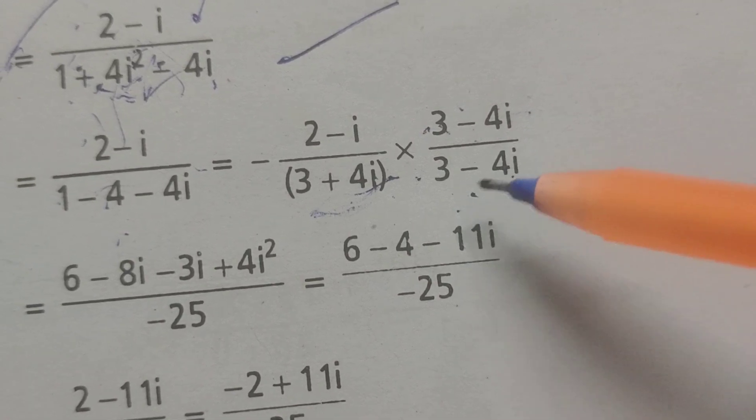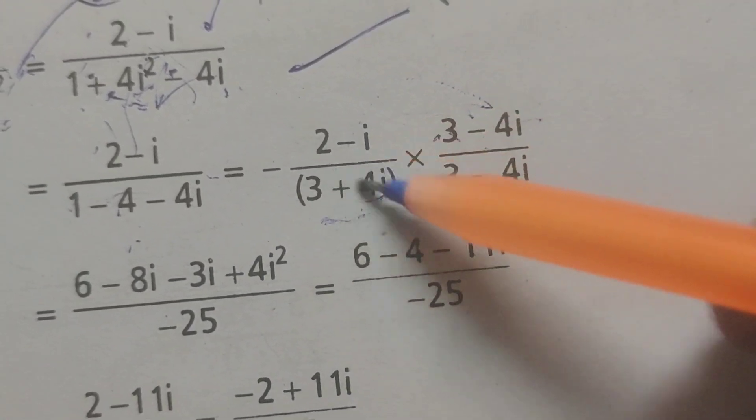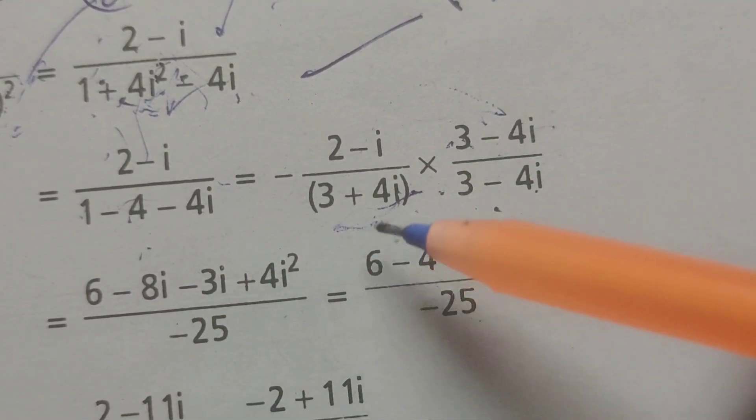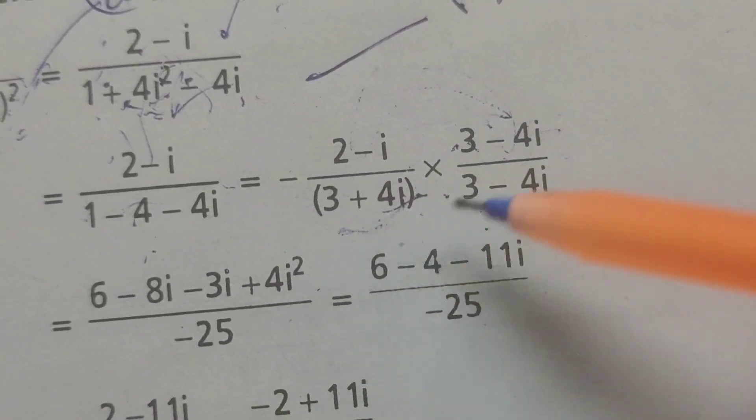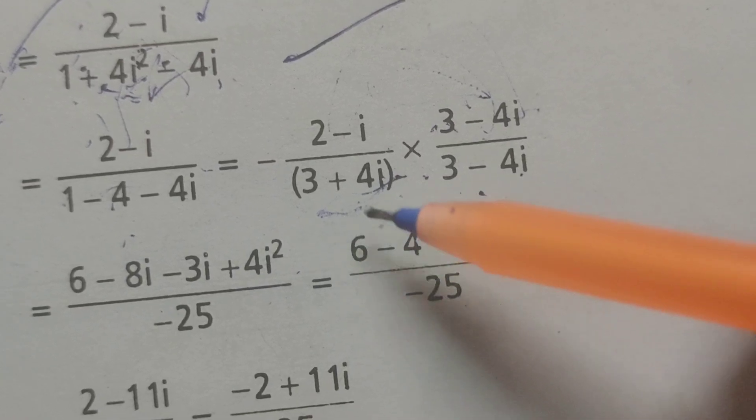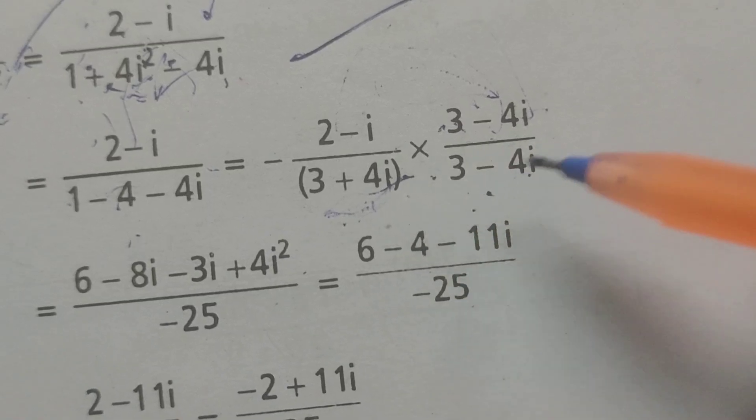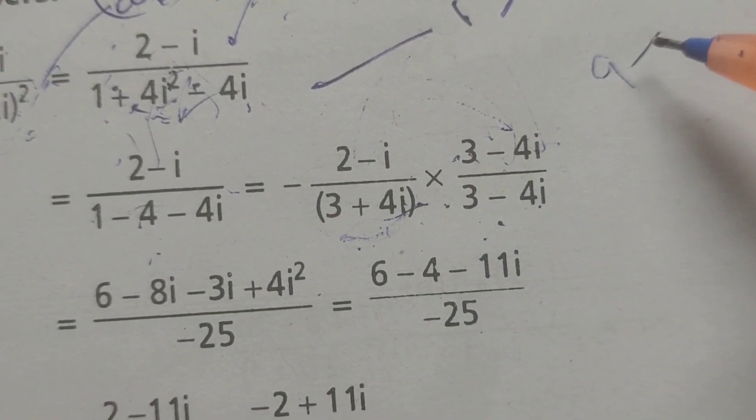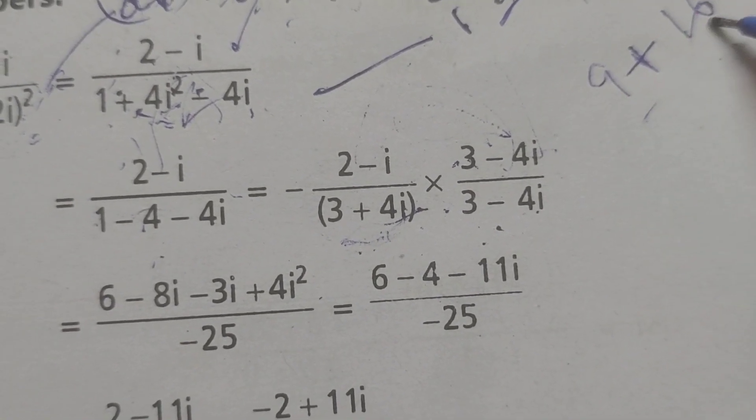Multiplying these two terms: 2×3 is 6, minus 2×4 is 8i, minus 3i, and minus times minus is plus, so 4i². By the formula (a+bi)(a-bi) = a² - b², we get 9 - 4i² = 9 - 4(-1) = 9 + 16 = 25.